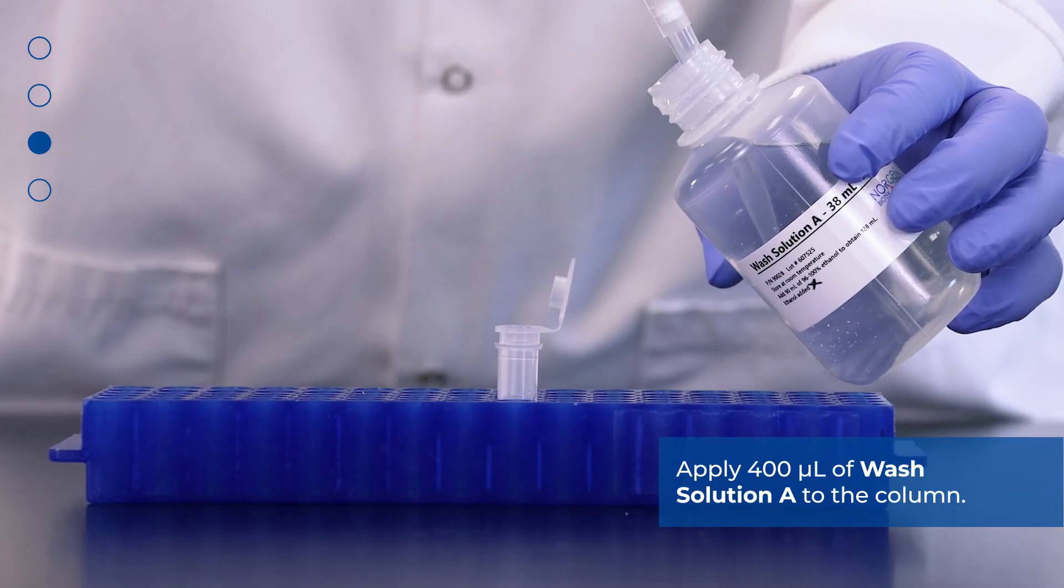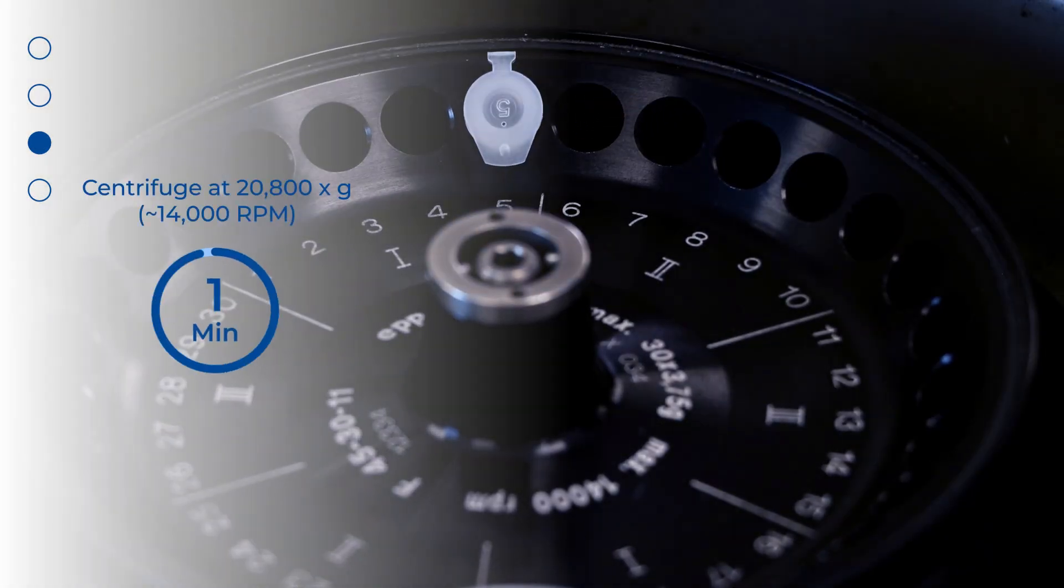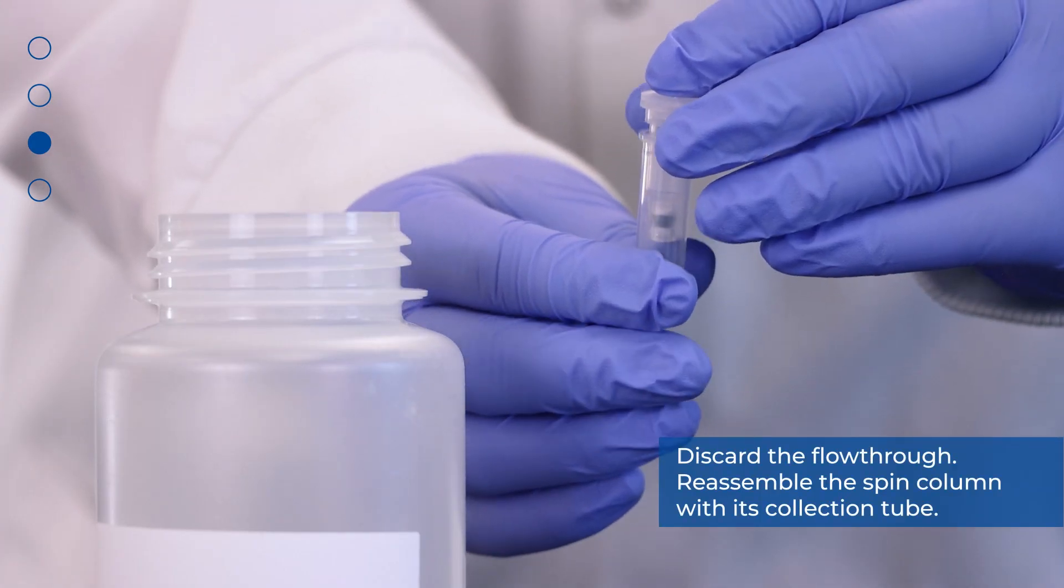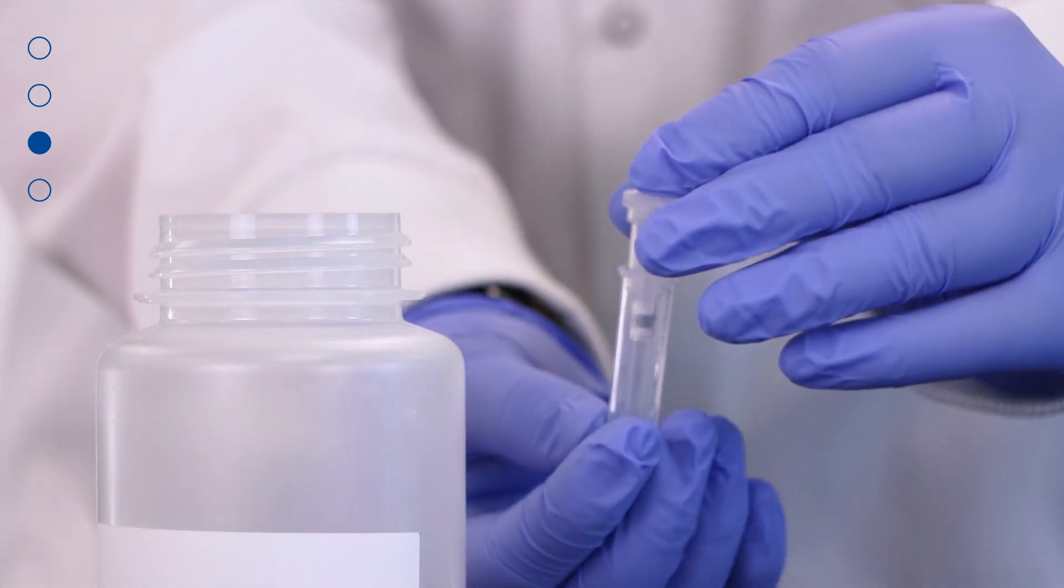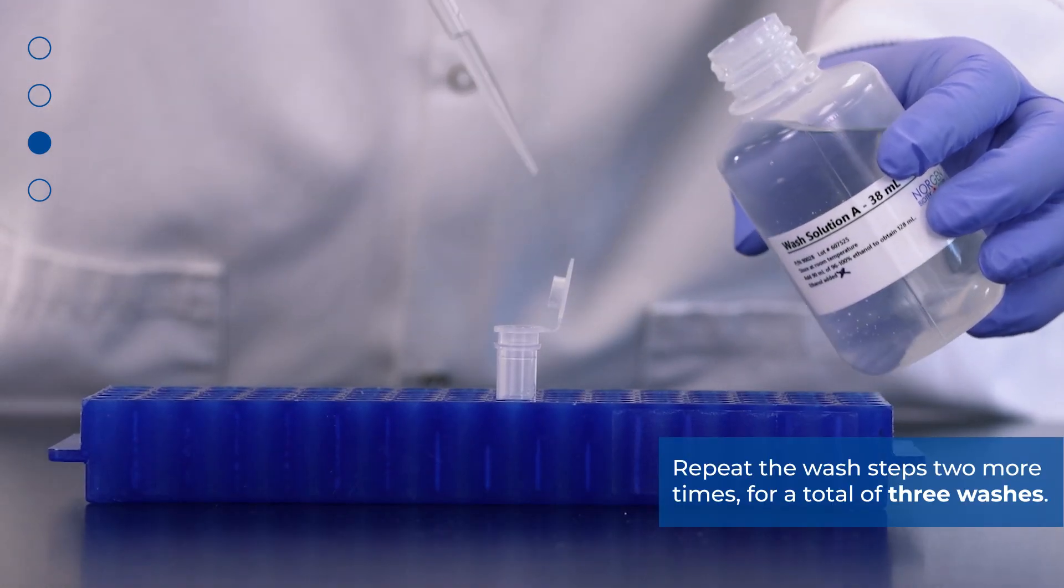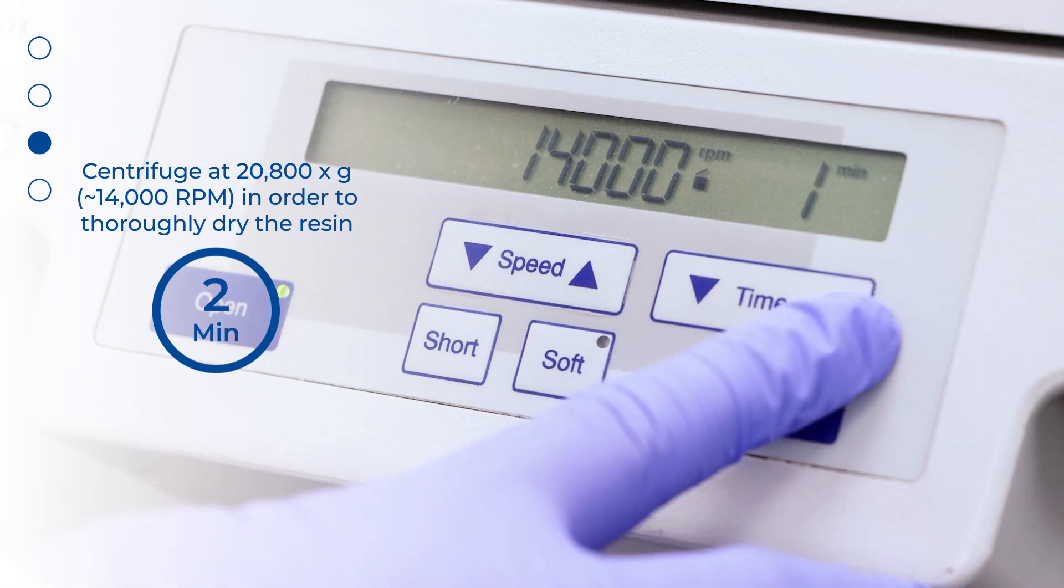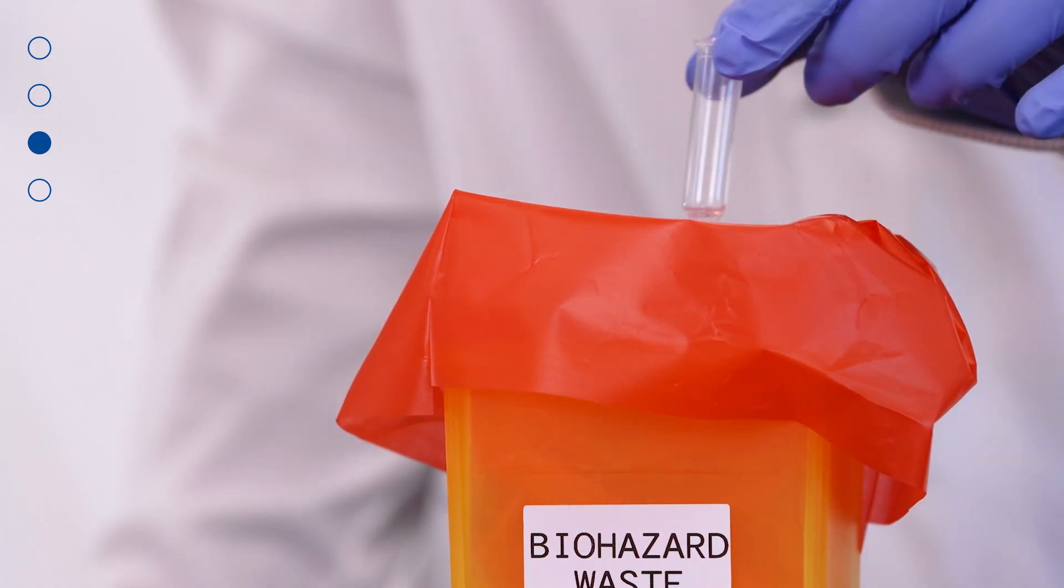Apply 400 microliters of wash solution A to the column and centrifuge for 1 minute. Discard the flow-through and reassemble the spin column with its collection tube. Repeat the wash steps 2 more times for a total of 3 washes. Spin the column for 2 minutes in order to thoroughly dry the resin. Discard the collection tube.